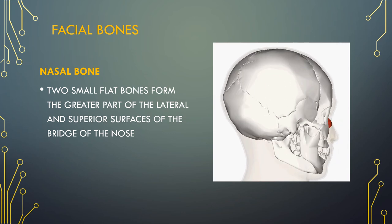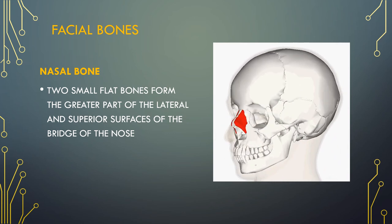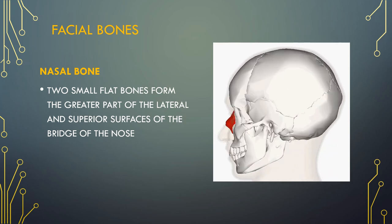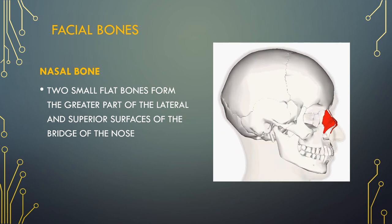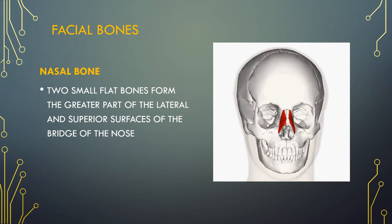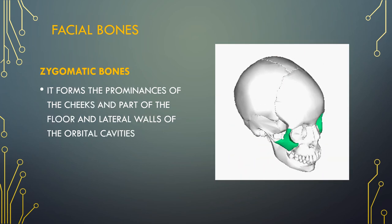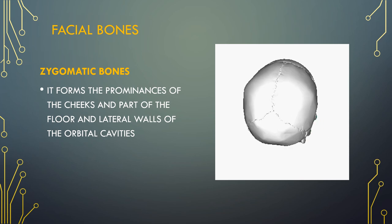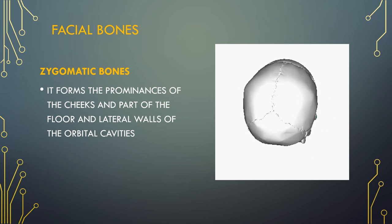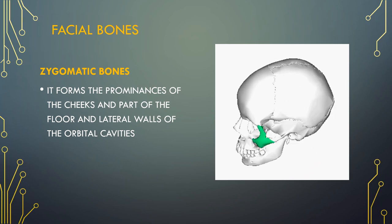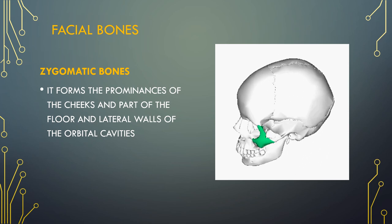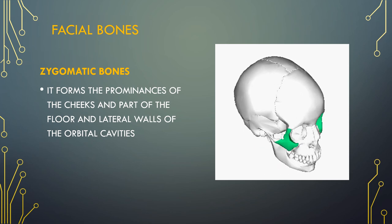The nasal bones are two small oblong bones, varying in size and form in different individuals. They are placed side by side at the middle and upper part of the face and by their junction form the bridge of the upper one third of the nose. The zygomatic bone joins the bones of the face while protecting the arteries, nerves, veins and organs which lie below them. The arches of the zygomatic bone provide a person's cheeks with the structure to fill out the face and form part of the floor of the lateral walls of the orbital cavities.